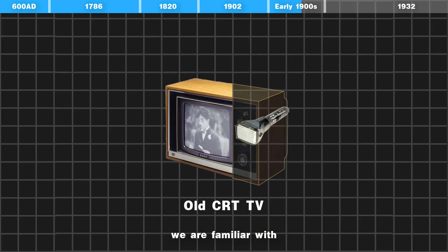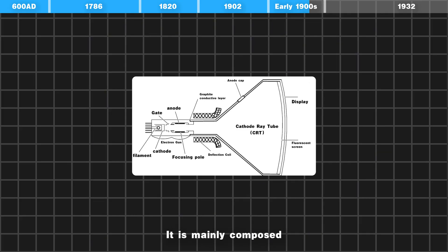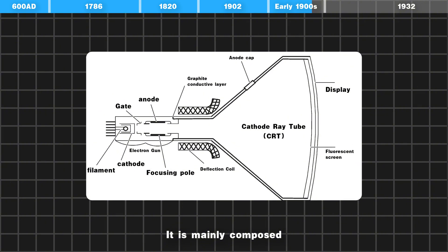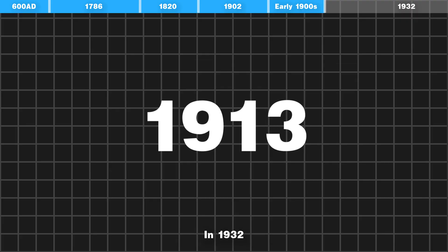The old TV picture tube we are familiar with is an electron beam tube. It is mainly composed of an electron gun, deflection coil, sheath, fluorescent screen, and display screen.